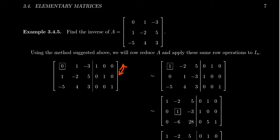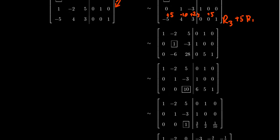To get rid of the -5 below, we're going to take row 3 and replace it with row 3 plus 5 times row 1. So we get 0, -6, 28, 0, 5, 1. Now we can move our pivot position to the 2,2 position. We want to get rid of that -6 that's below the pivot. So we're going to take row 3 and add to it 6 times row 2. We get 0, 10, 6, 5, 1.